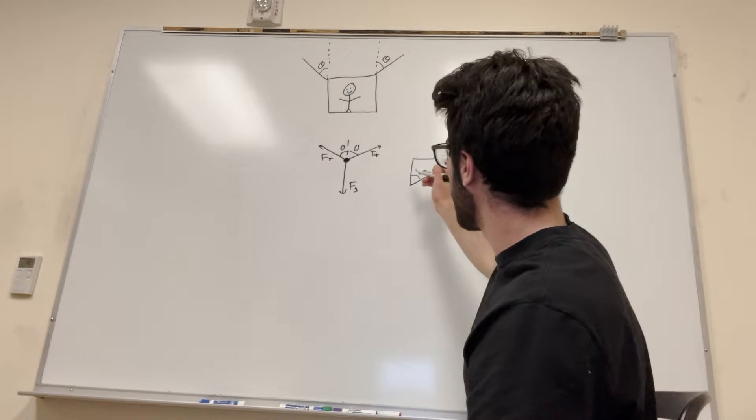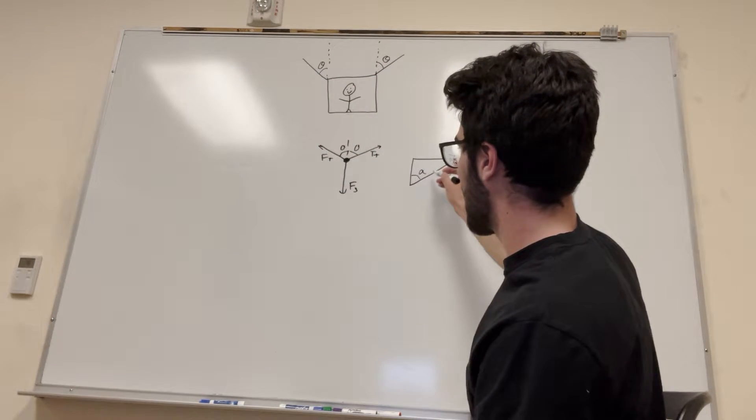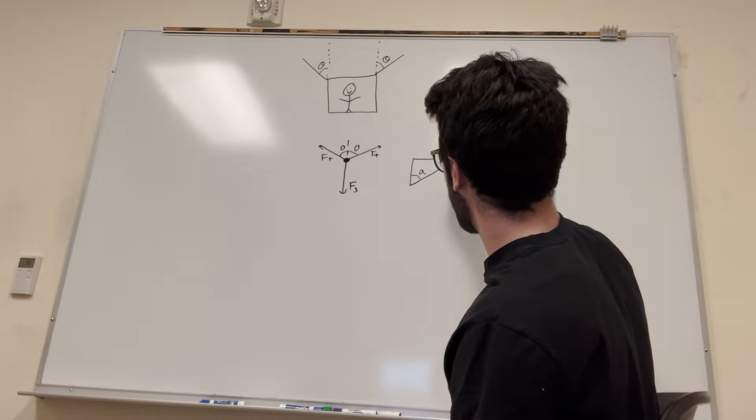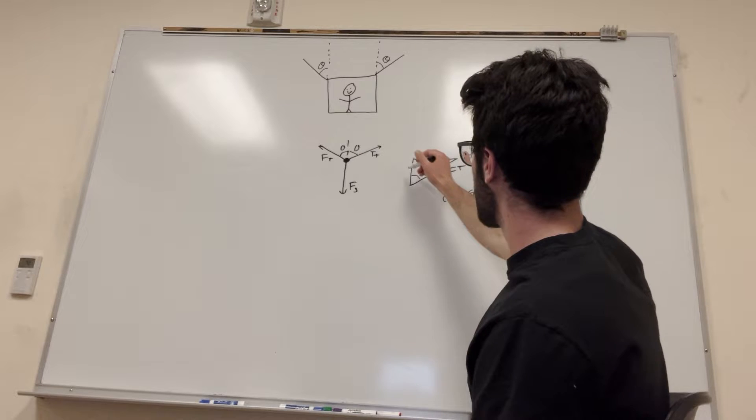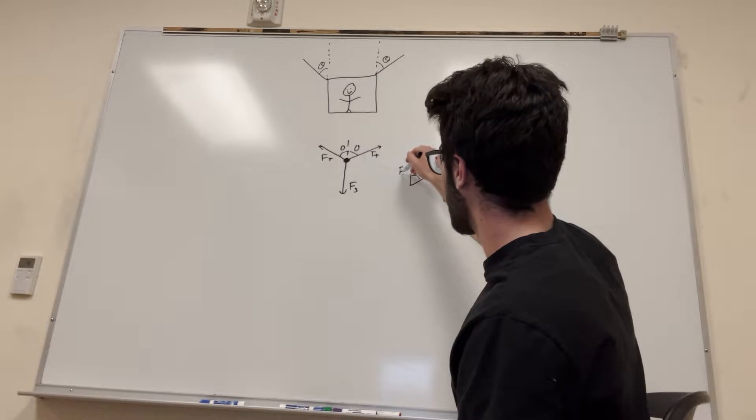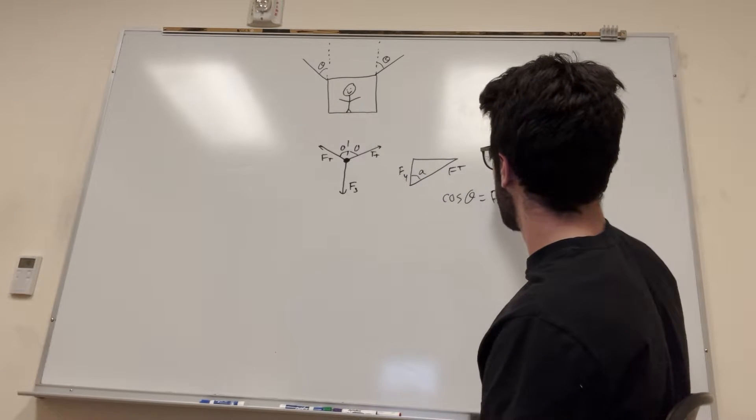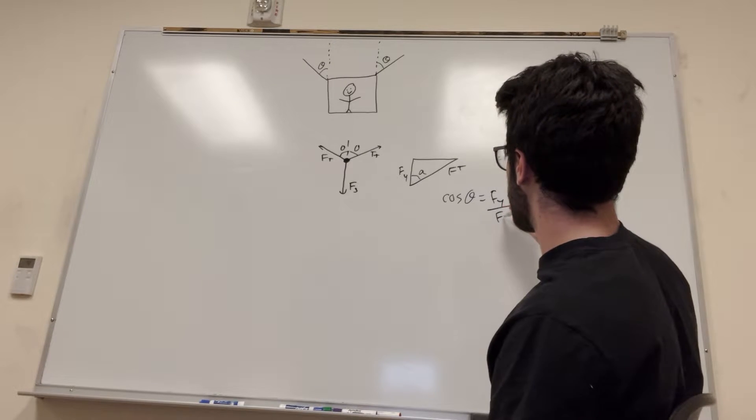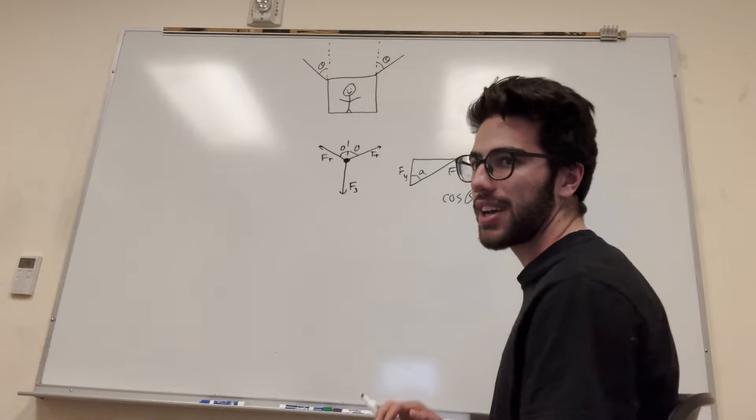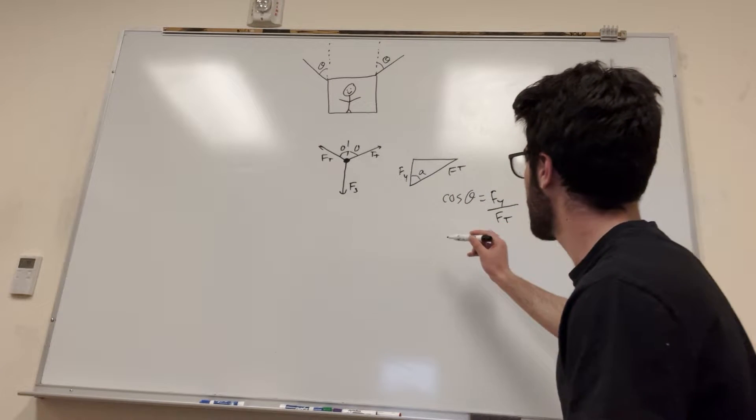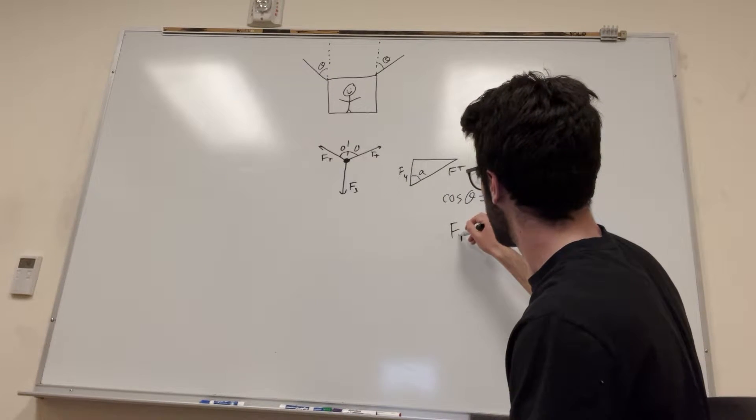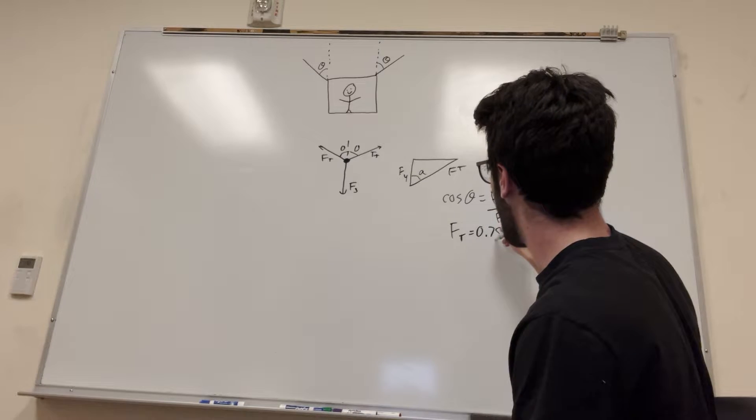And if we want to find this, what we do is, because this is the hypotenuse, you can see that cosine of theta is equal to the adjacent here, which we're going to call force of y, divided by force of tension, right? This is our little angle thing. And we also know that force of tension is equal to 0.75 the force of gravity.